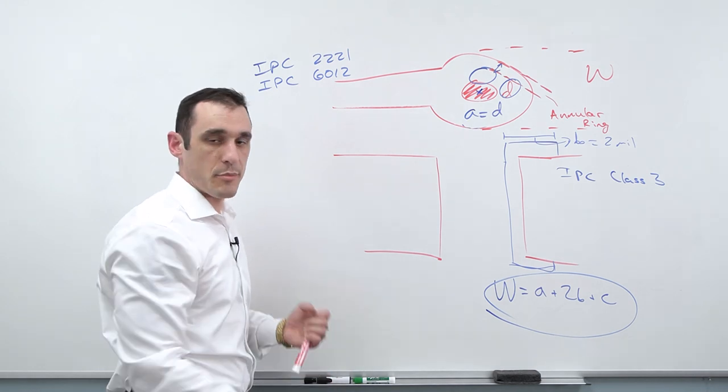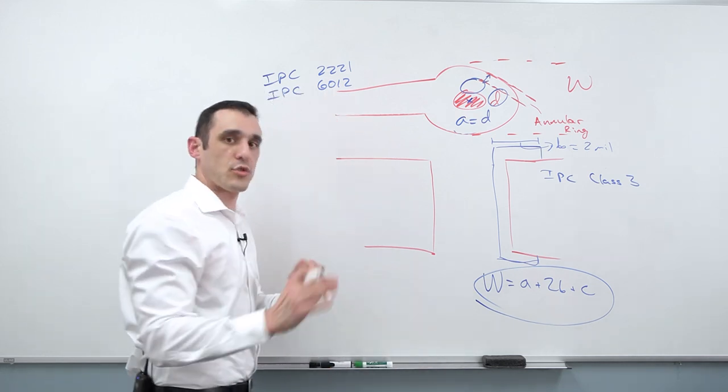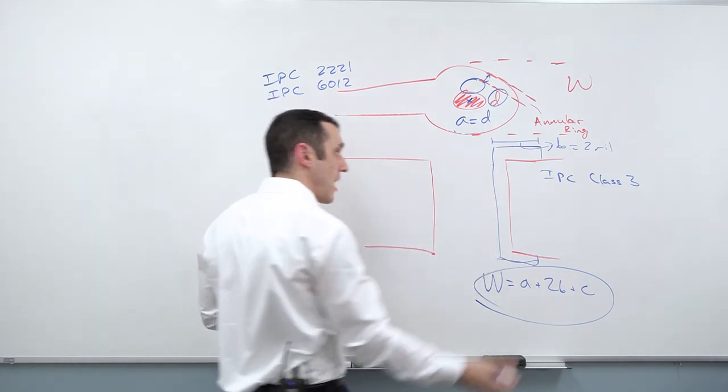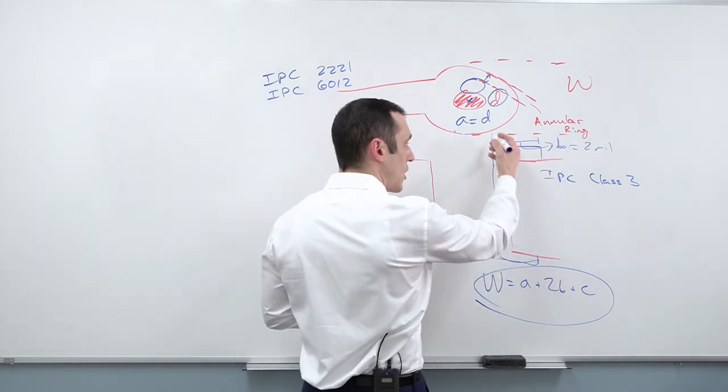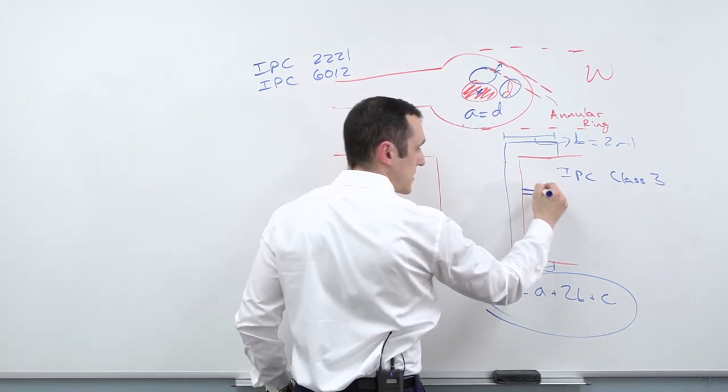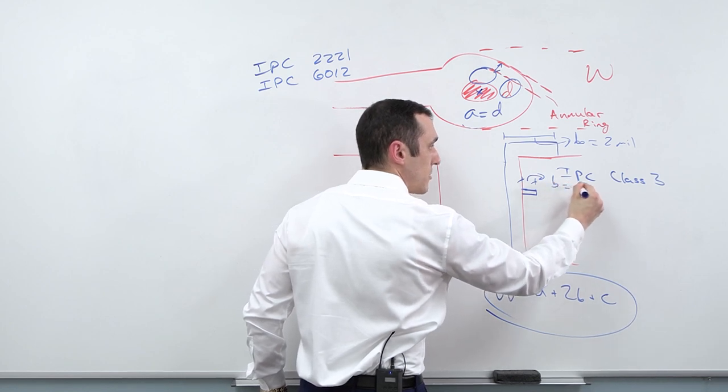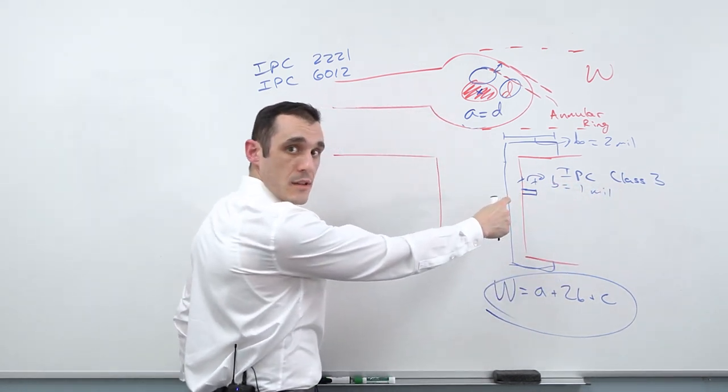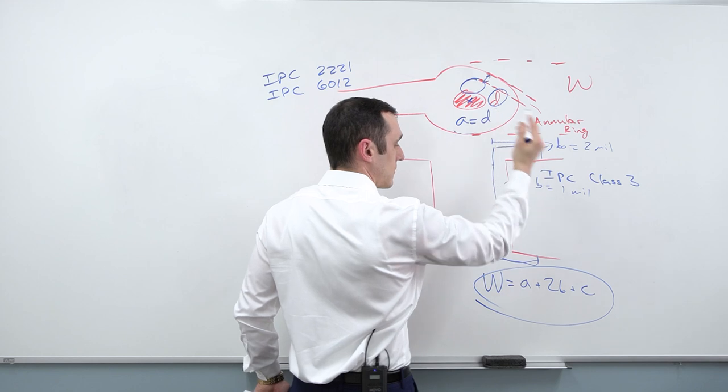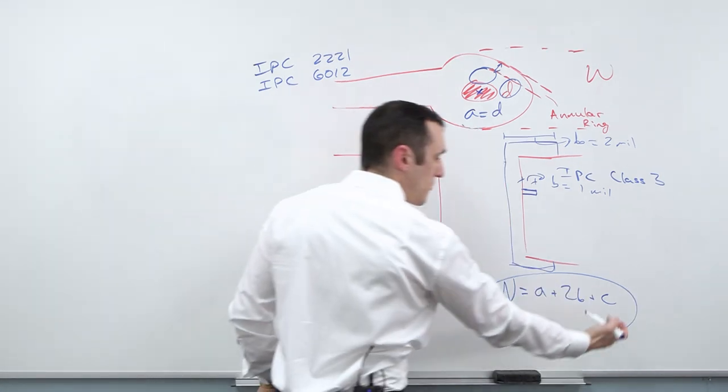And IPC class three are the highest reliability products next to class 3A, which is then like mil aero, life-saving medical equipment, all sorts of other stuff that is extremely high reliability. But for generic electronics that still need to have perpetual uptime, IPC class three is the highest reliability class. They specify two mil along this distance. Now for the internal layer, let's say we have an internal layer here, this pad on the inside of an internal layer. Here, this distance B is going to be one mil. So this is the minimum annular ring that you can have on an internal layer. So it's different for external versus internal layers. We have A, that's our diameter of our finished hole. We have B, that's again, depends if you're talking about internal or external layers. And then we have C.